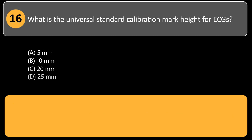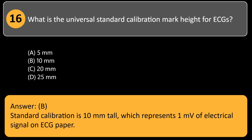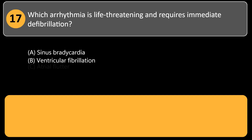What is the universal standard calibration mark height for ECGs? A. 5 mm. Answer: B. Standard calibration is 10 mm tall, which represents 1 mV of electrical signal on ECG paper.